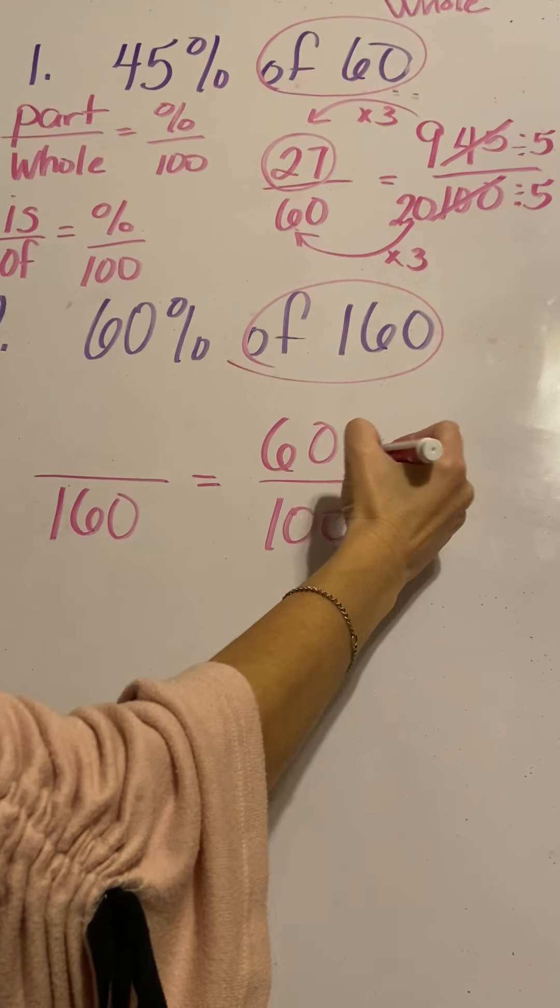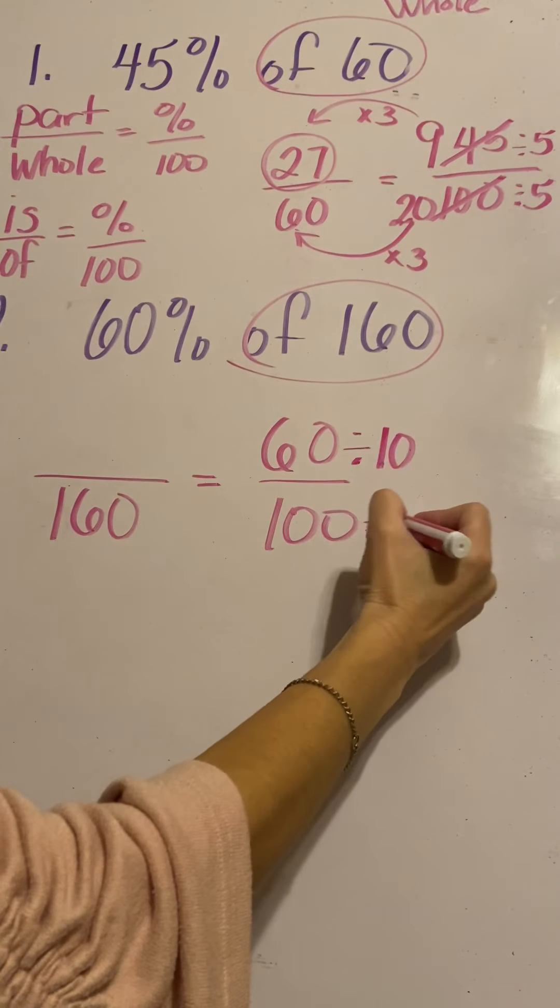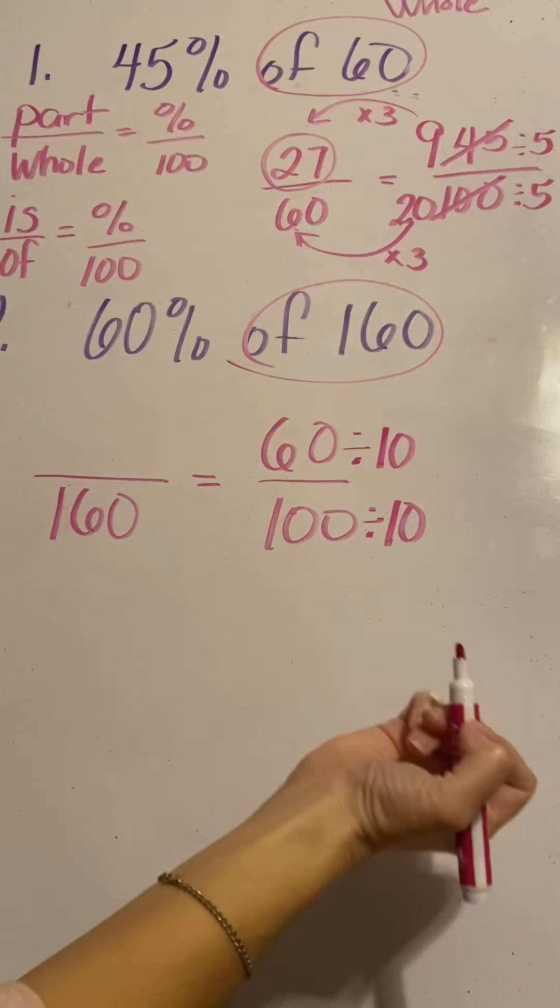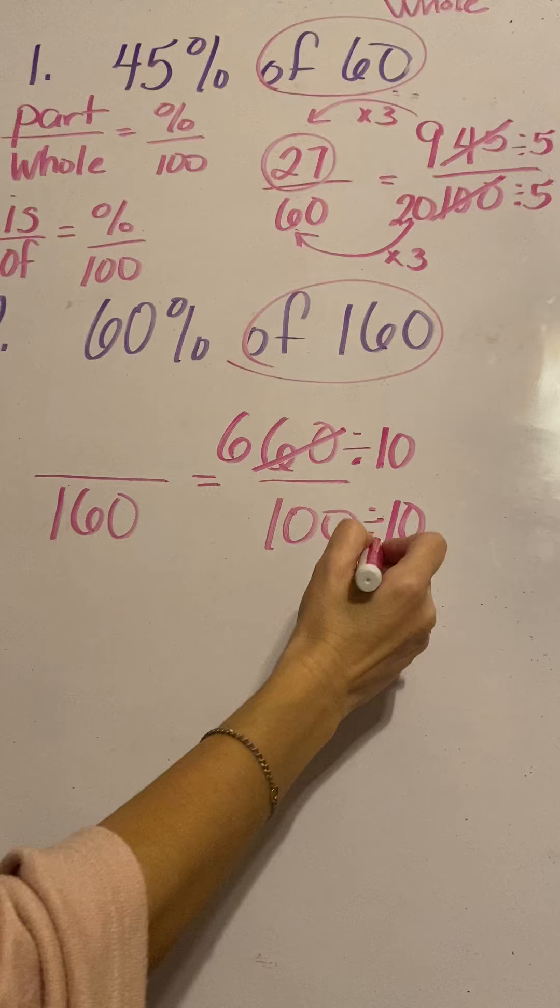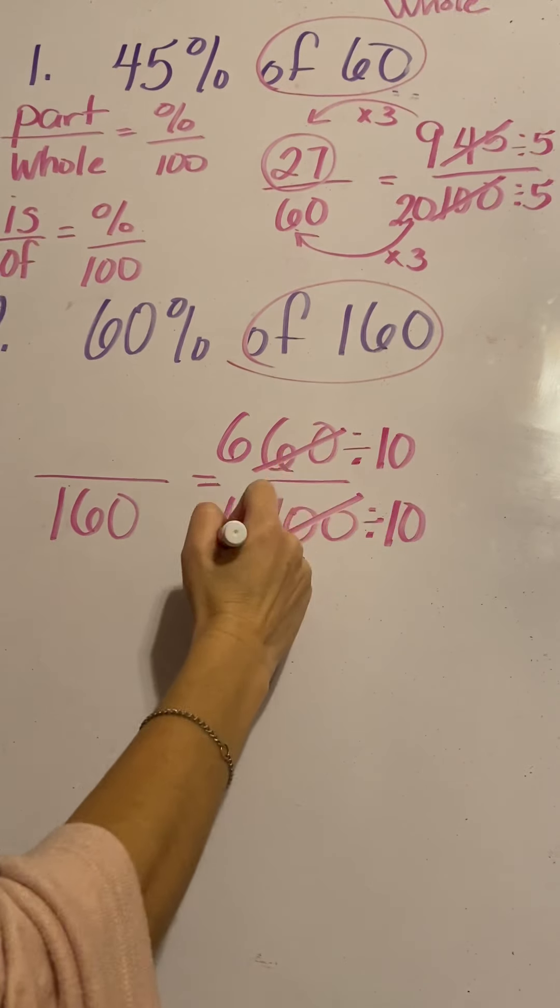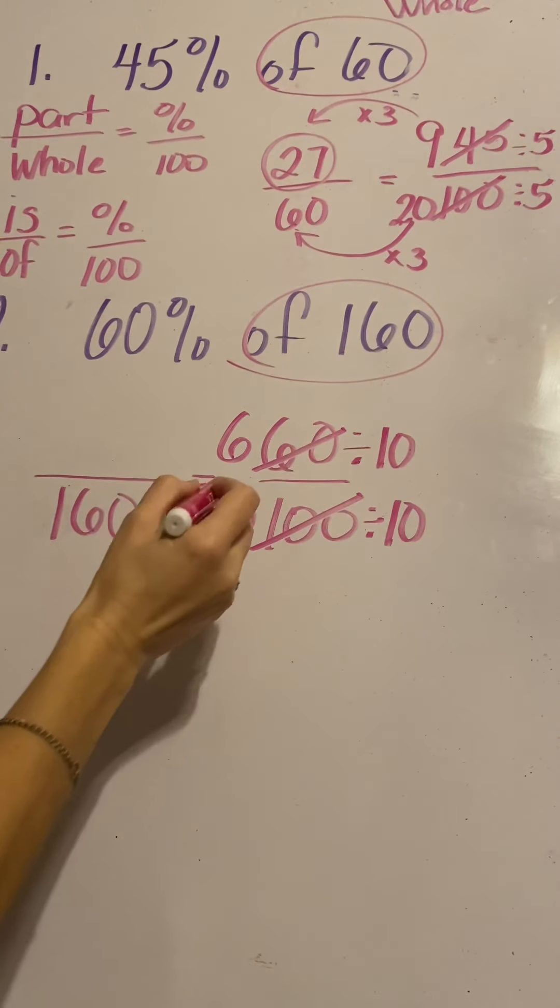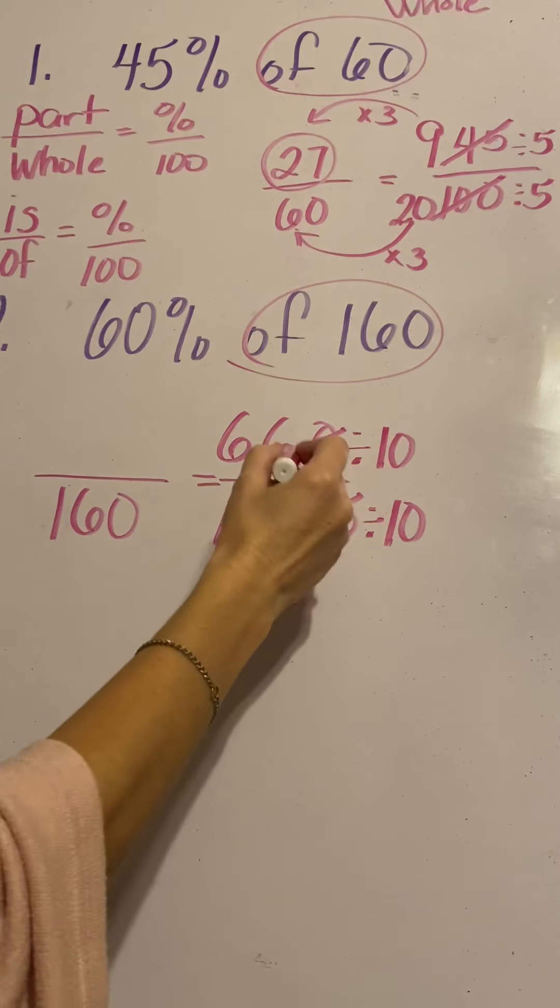So both of these will divide by 10. It'll also divide by 20, but 10 is actually easier on this one. 60 divided by 10 is 6. I'm going to slash that out and put a 6. 100 divided by 10 is 10. Slash that and I'm going to put a 10. So now I've got 6 tenths instead of 60 out of 100.